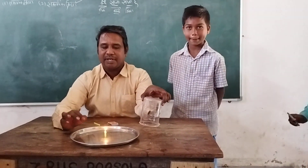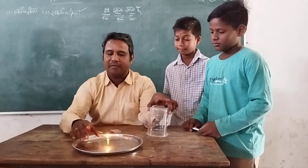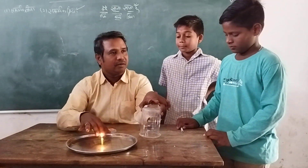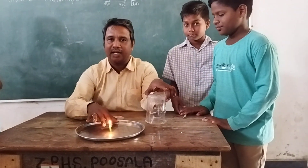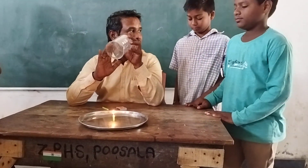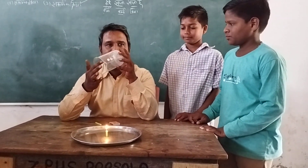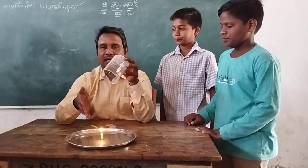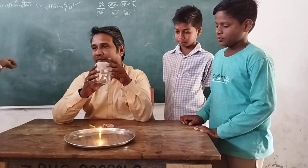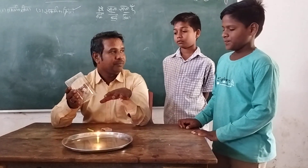Children, continuing our previous topic — we have taken a plate, lit the candle, and poured water in the plate. Oxygen is needed for burning the candle. In the previous experiment, we inverted the beaker over the candle, and the candle kept burning until the oxygen inside the beaker was used up. After the complete exhaustion of oxygen, we observed that the flame was put out.